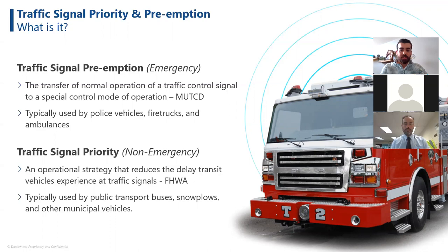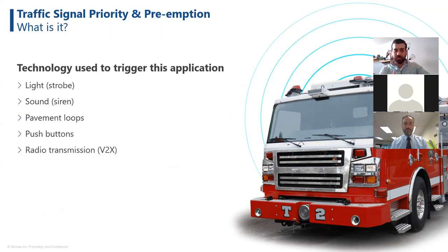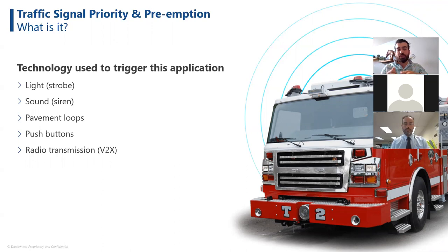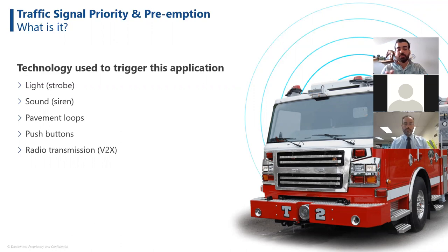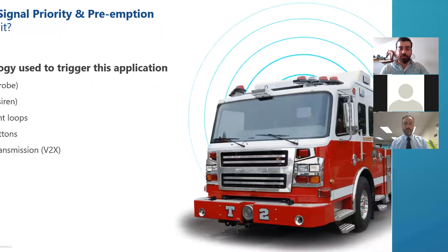Multiple technologies have been used to trigger preemption: light, sound, pavement loops, push buttons — for example, a firefighter near a station pushing a button to trigger preemption as they pull out. The last option is radio transmission via V2X, which is what we'll focus on. Throughout my presentation I'll concentrate on the traffic signal preemption application, not the priority, and you'll see why by the end.